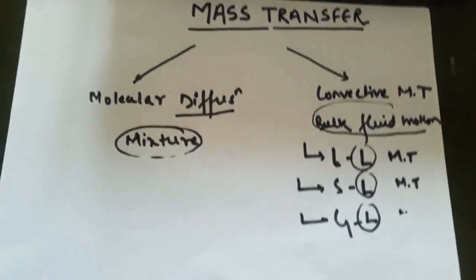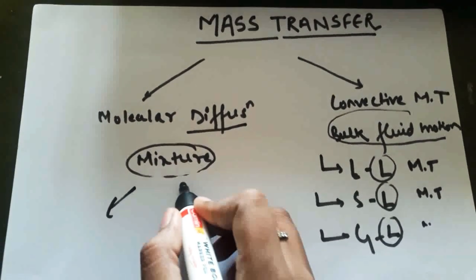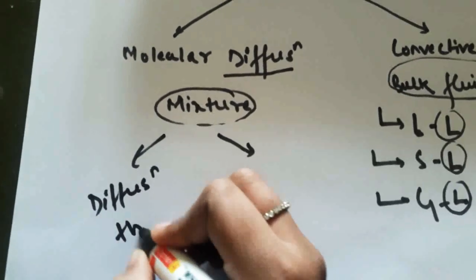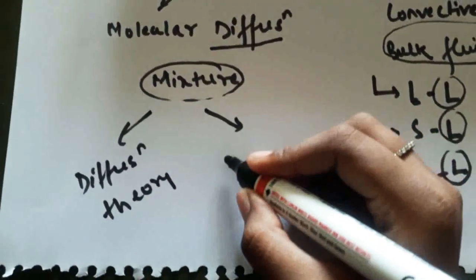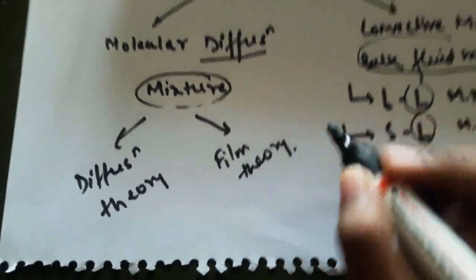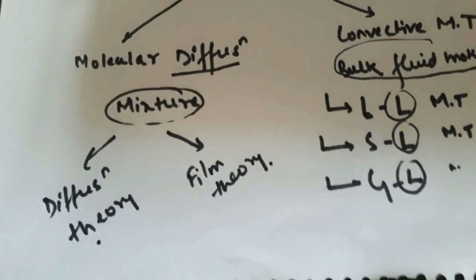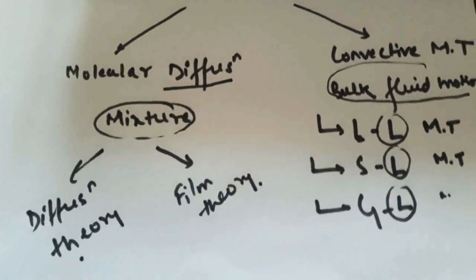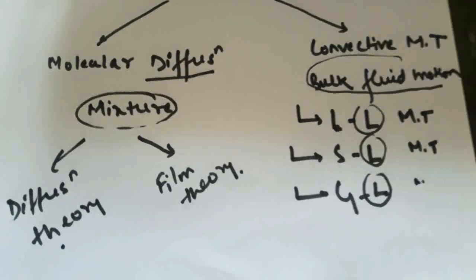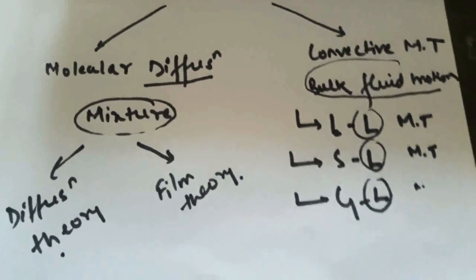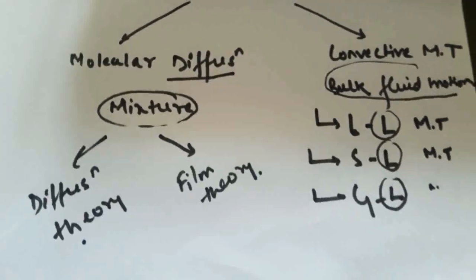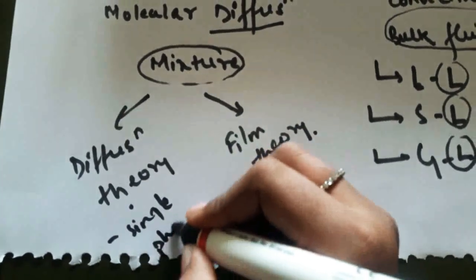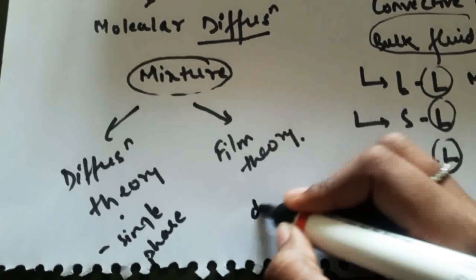In molecular diffusion, we consider two types of theories: the first one being the diffusion theory and the second one being the film theory. In diffusion theory we consider a single phase system in which only one phase has a concentration difference — like in a sugar-water mixture where sugar or water moves from higher to lower concentration. In film theory we consider different phases.